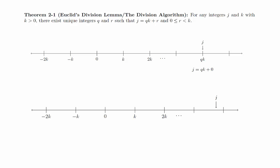If not, then j must lie between two multiples of k. We can label them so that q k is on the left, and that q plus 1 times k is on the right. We can then define the value of r as the distance between q k and j.